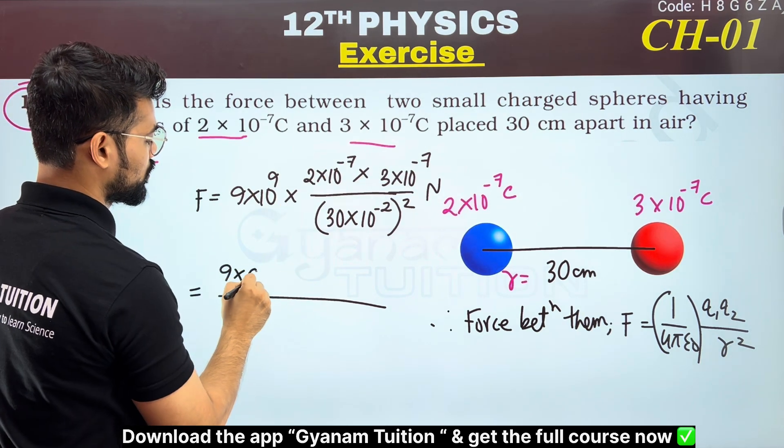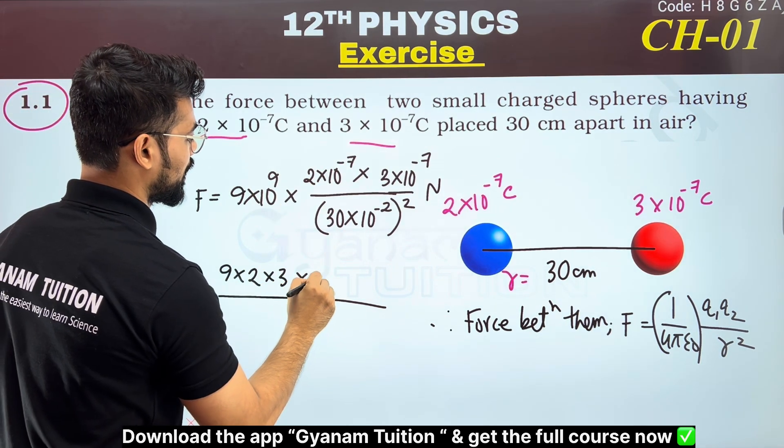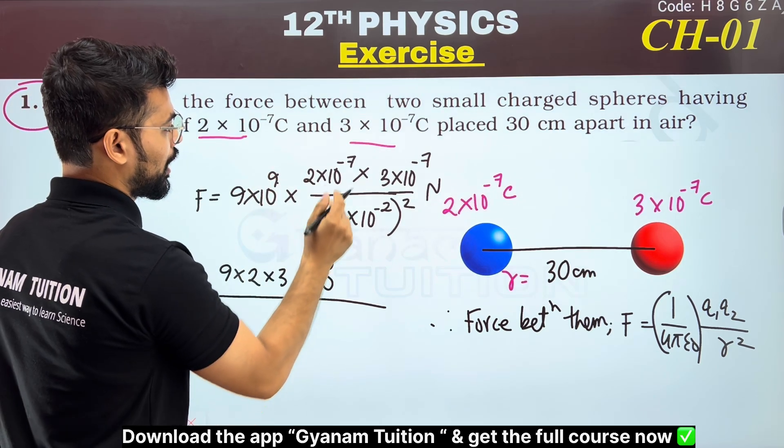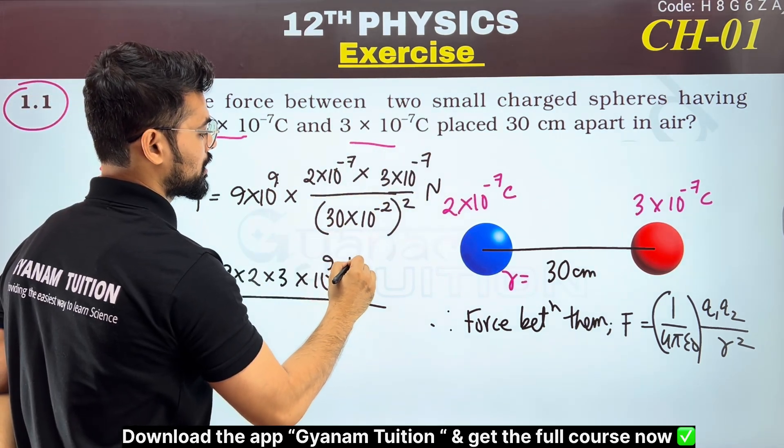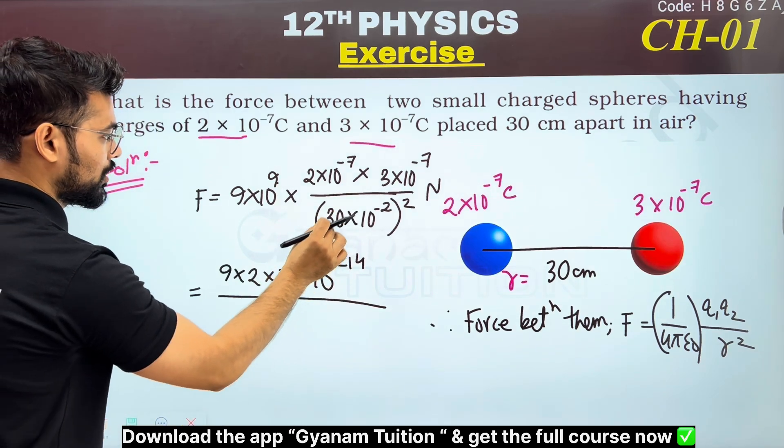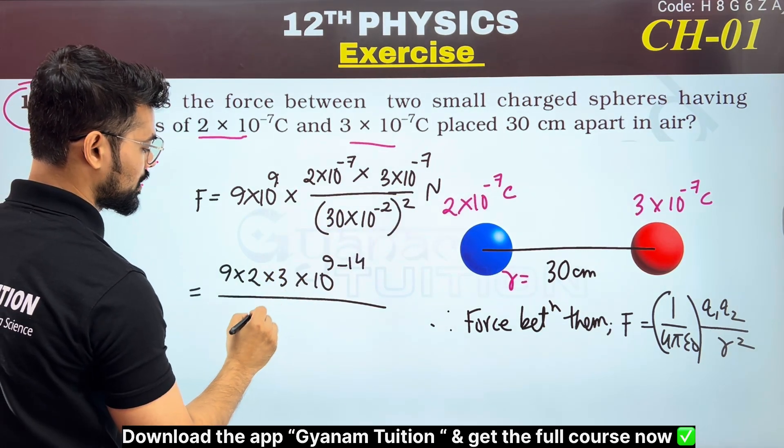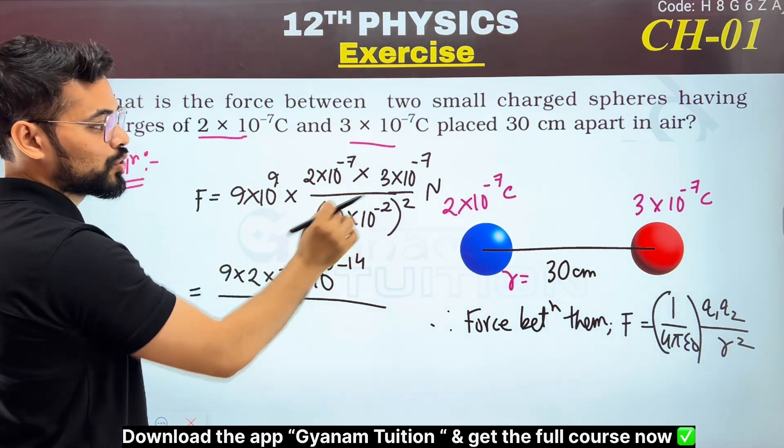9×2×3 gives us... if we take 10⁹ and 10⁻⁷, 10⁻⁷ gives 10⁻¹⁴. For the denominator, 30 squared equals 30×10⁻² squared.